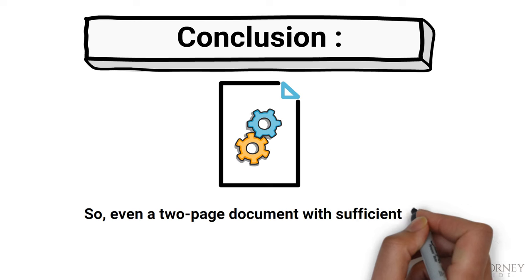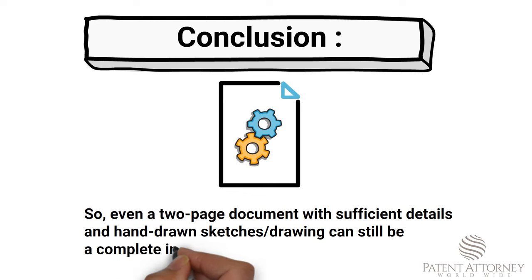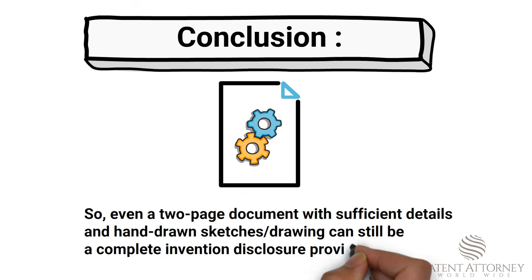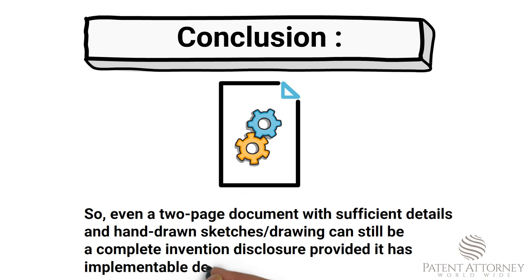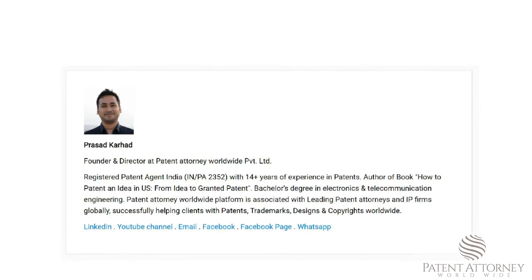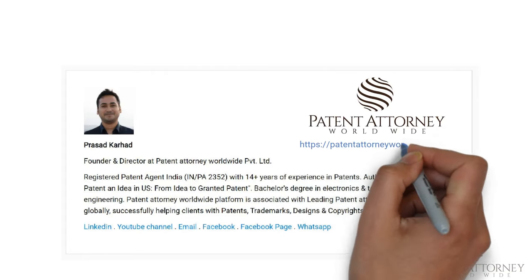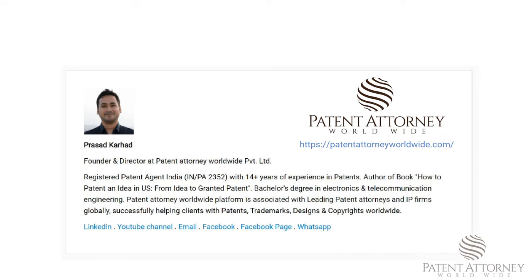So, even a two-page document with sufficient details about your invention, and even hand-drawn sketches or drawings, can still be a complete invention disclosure — provided it has implementable details about your invention. I hope the information in this video helped you in understanding how to create a complete invention disclosure and what exact information is needed to proceed with the patent application. For more information on patents, you may visit patentattorneyworldwide.com. Thank you for your time. Take care.